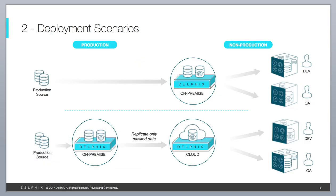Delphix has two different deployment scenarios. In the first, some companies have the Delphix engine and their entire data center on-prem. Delphix connects to the source, manages virtual data sets, and provisions to downstream users. What you see on screen are what we call data pods. We can logically relate many different data sources — for example, a transaction database, a customer call center database, and a financial database — grouped together so that with one API call, a developer or QA analyst can refresh all those instances to the same point in time.